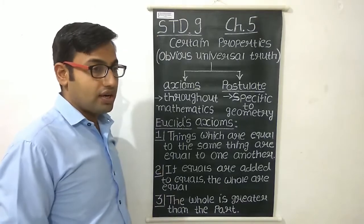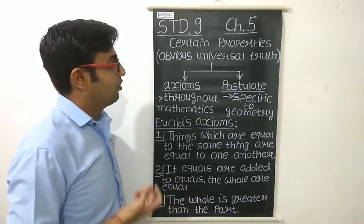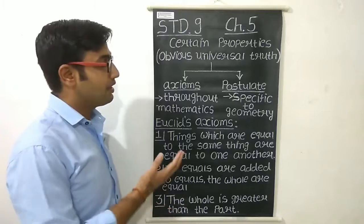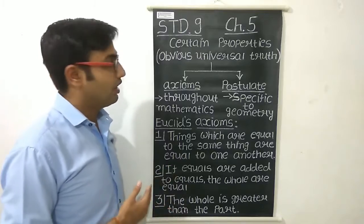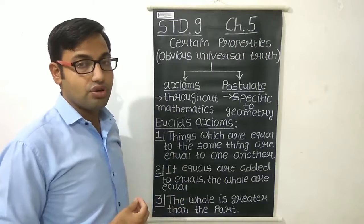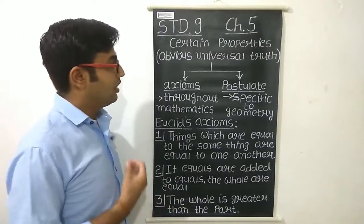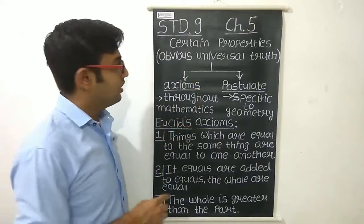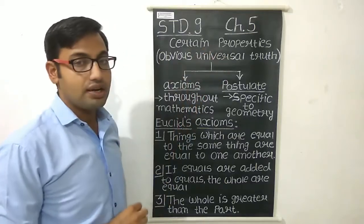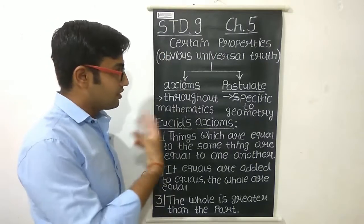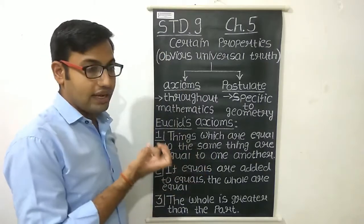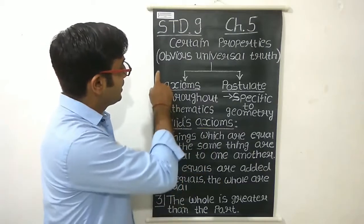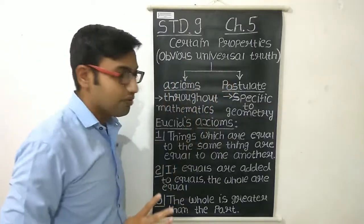We have started with the basic terminology. The first thing we studied is the definitions given by Euclid. Now after giving the definitions of some terms, Euclid assumes some certain properties. Those assumptions of properties cannot be proved because they are obvious universal truth.